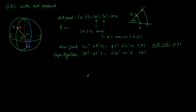Next we have to convert these coordinates, which are spherical coordinates with latitude and longitude, into x, y, z. Generally, from spherical to x, y, z: the x-coordinate equals the radius times the cosine of the latitude times the cosine of the longitude.